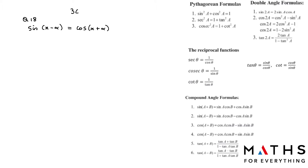The question is: sine(x minus alpha) is equal to cos(x plus alpha), prove that tan x is equal to 1. This is the only case where we will solve the right hand side and the left hand side together, because they are not asking us to prove that the left hand side equals the right hand side — they are asking us to prove something totally different.